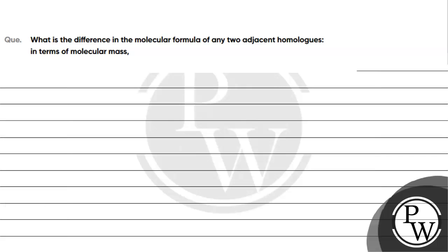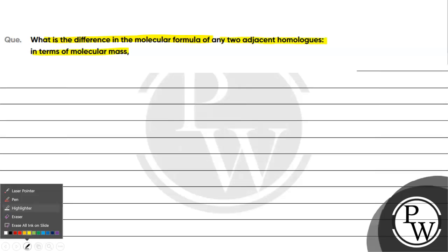Hello guys, let's read this question. The question says what is the difference in the molecular formula of any two adjacent homologues in terms of molecular mass?